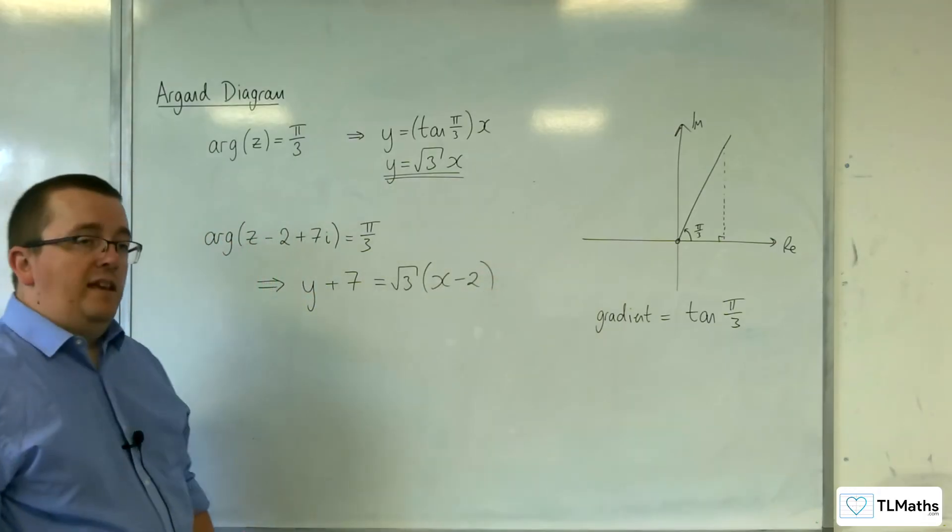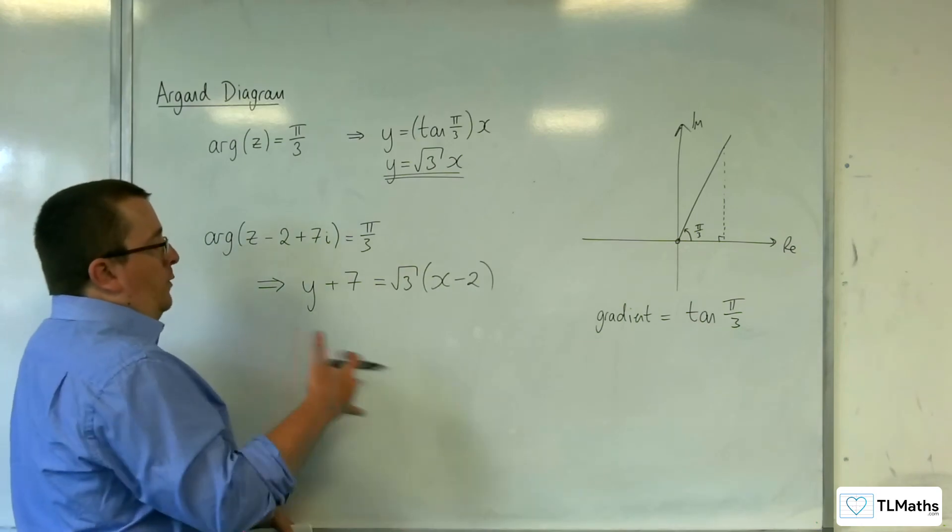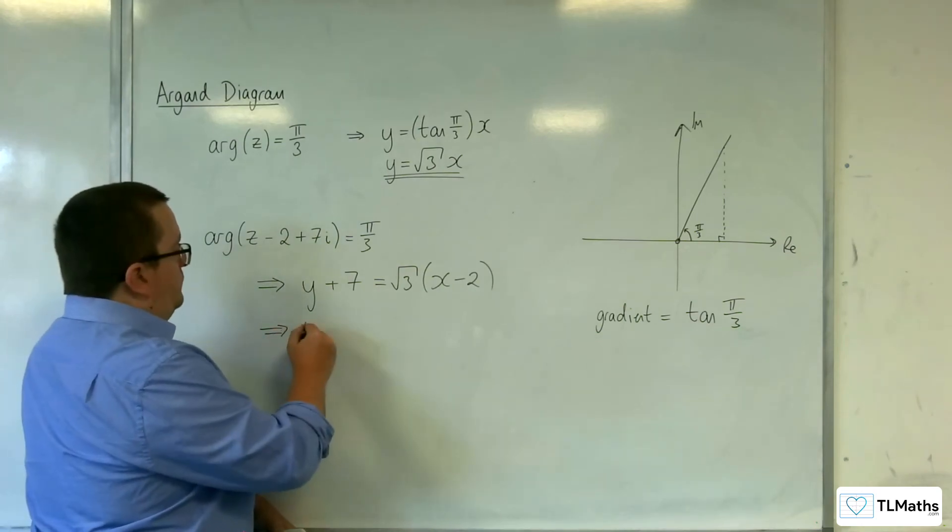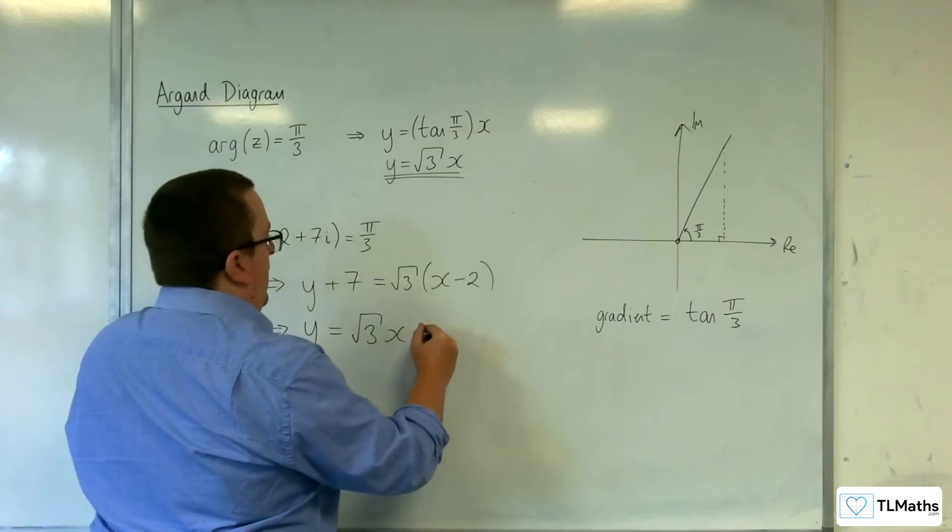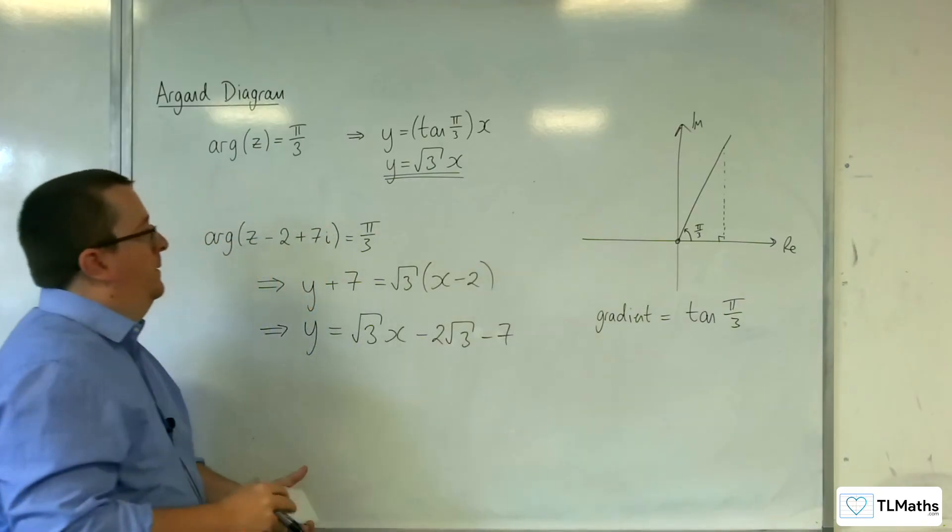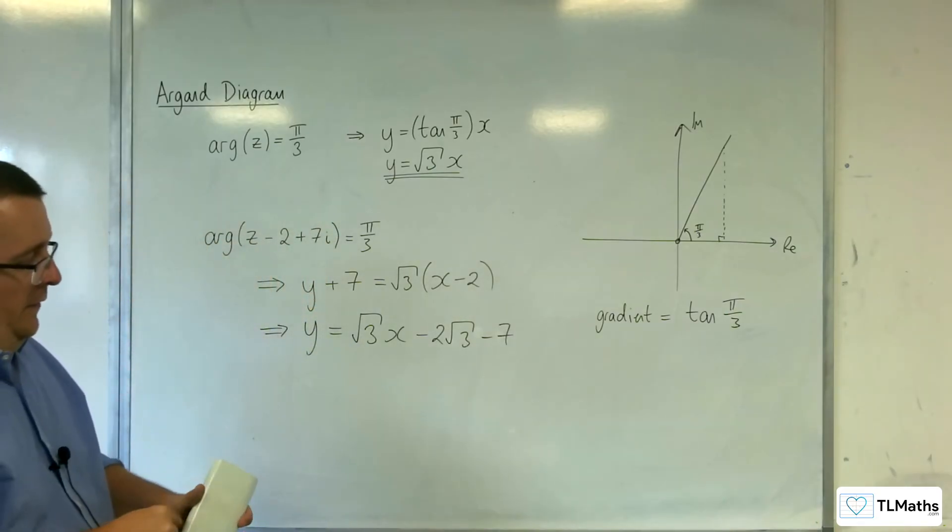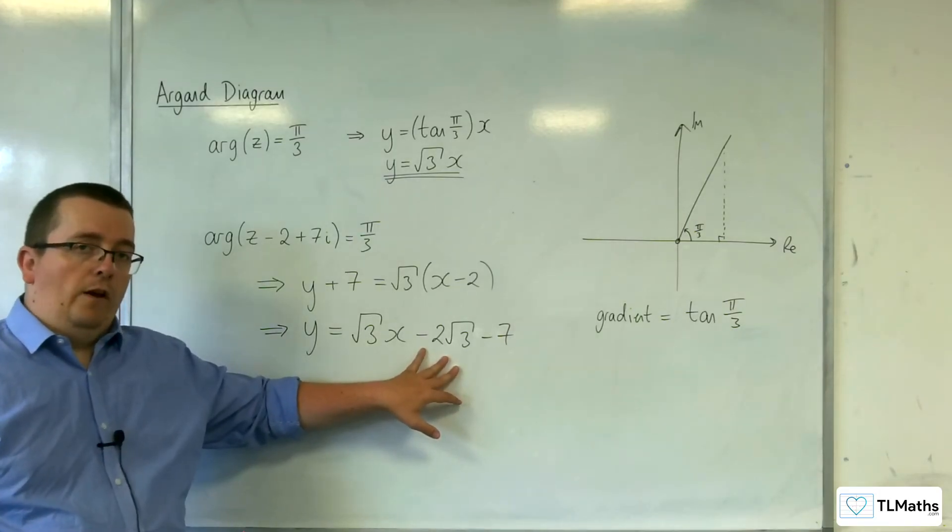And so that is the Cartesian equation of the line. And if you want to give it in y = mx + c form, it would be y = √3x - 2√3 - 7. And so that would be the Cartesian form of your half line.